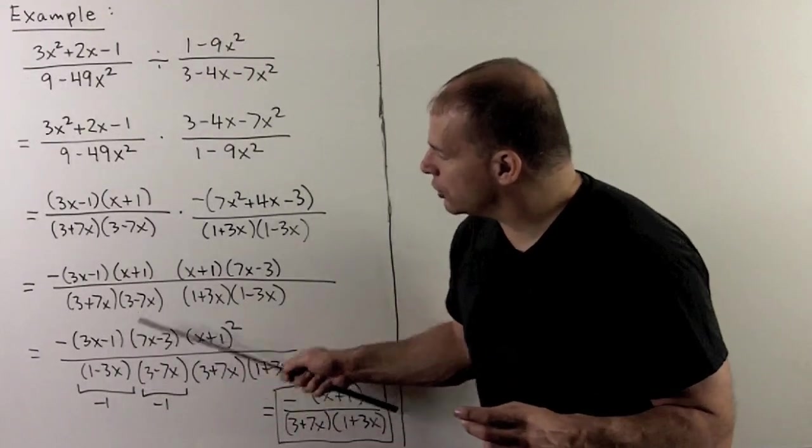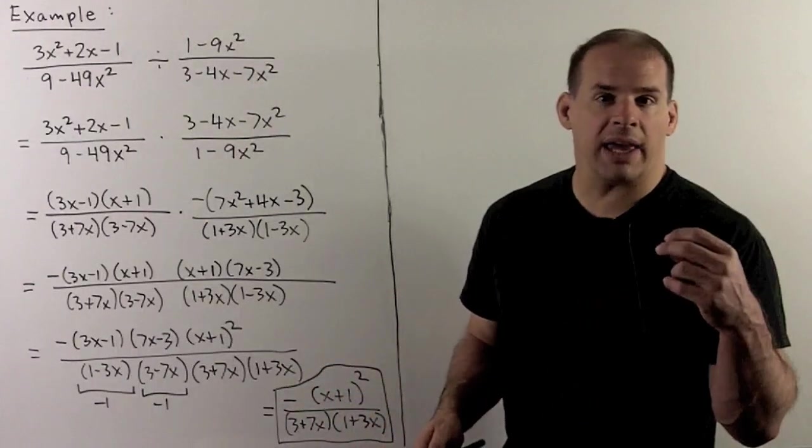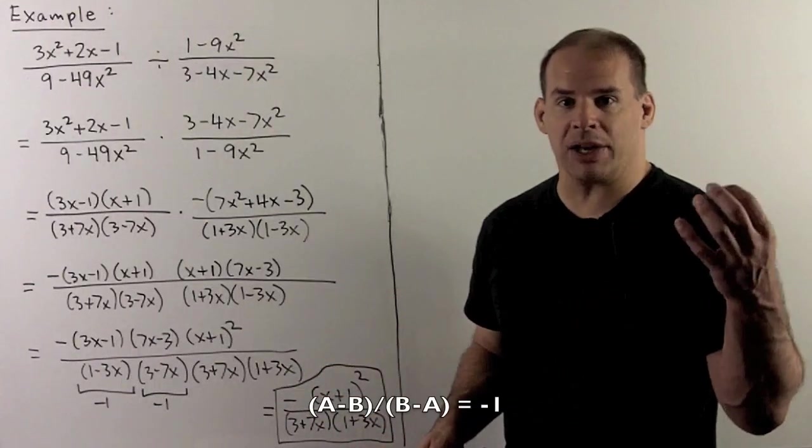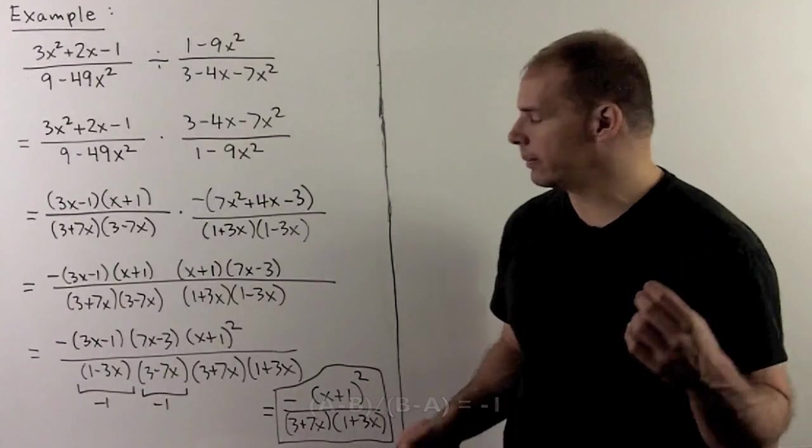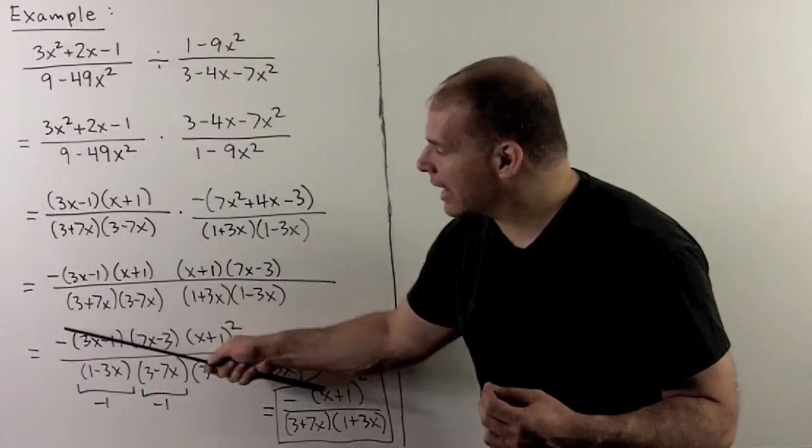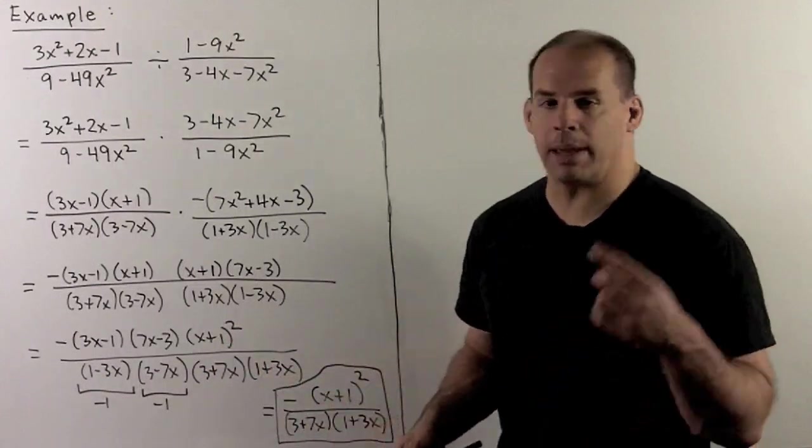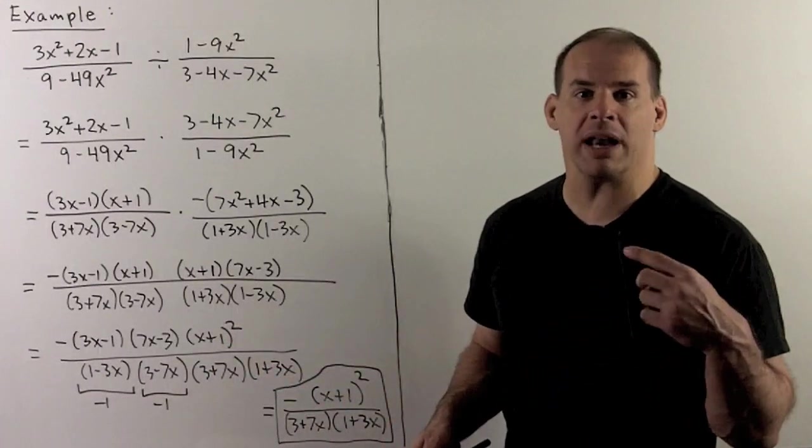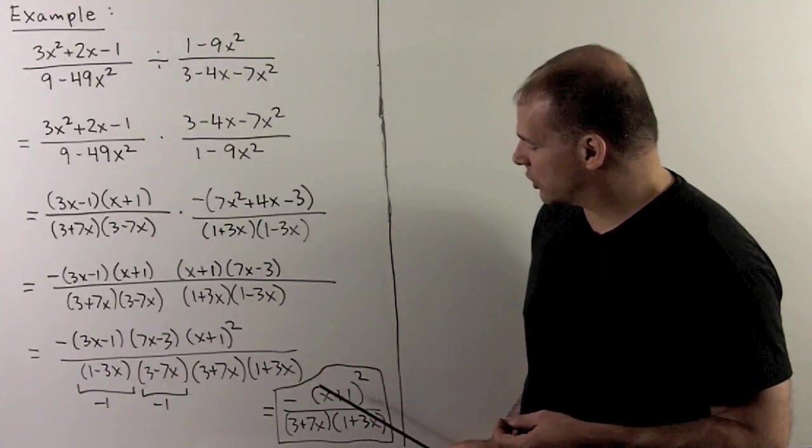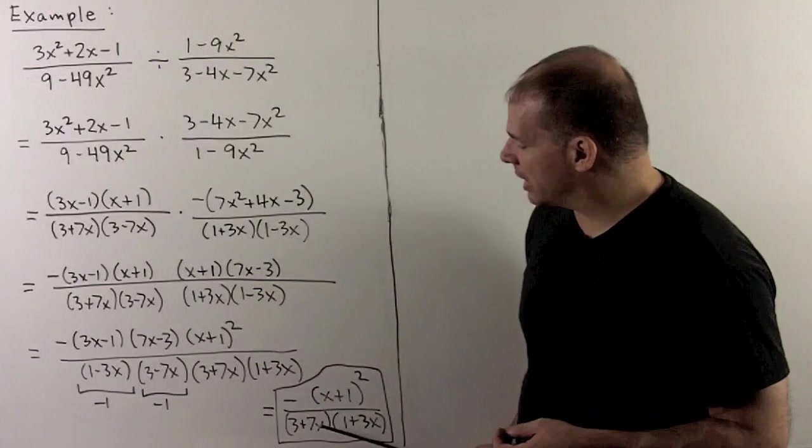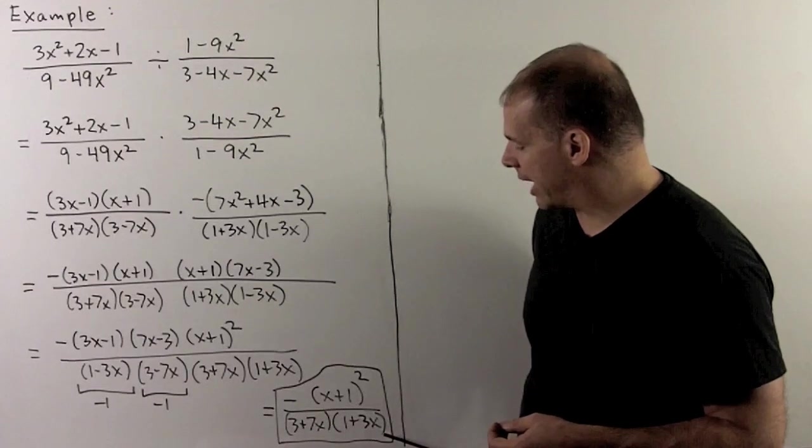Now, these first two terms don't quite cancel. They cancel to give us a minus 1. If I have a minus b over b minus a, I get minus 1. So these go away. I have a minus, minus, minus. Minus minus is a plus. Another minus is a minus. So I'm going to be left with minus x plus 1 squared over 3 plus 7x times 1 plus 3x.